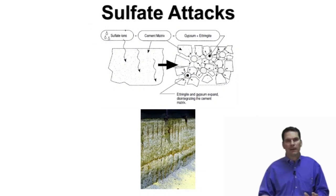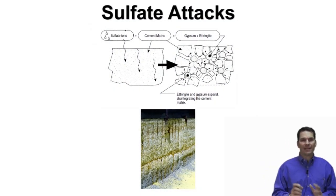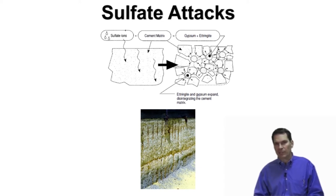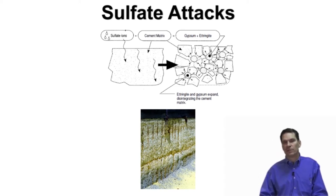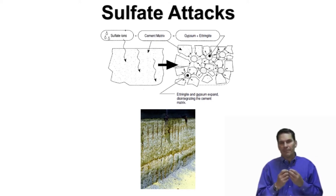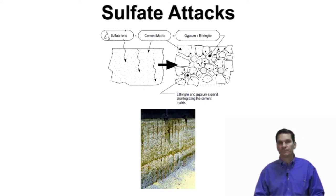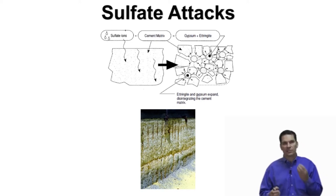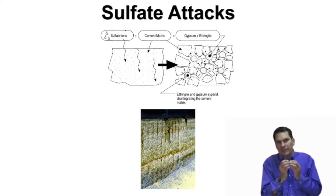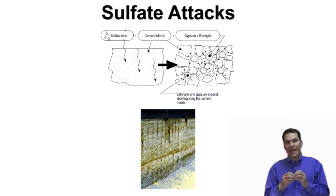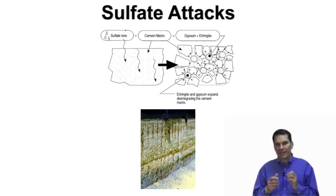From a matrix attack point of view, we've talked about acids and leaving the aggregate behind. But there are also certain scenarios where the matrix gets modified chemically, such as in the case of sulfur. What happens in sulfate attack is sulfate ions combine with the cement matrix, and part of the byproduct of that is actually a gypsum and an ettringite material.